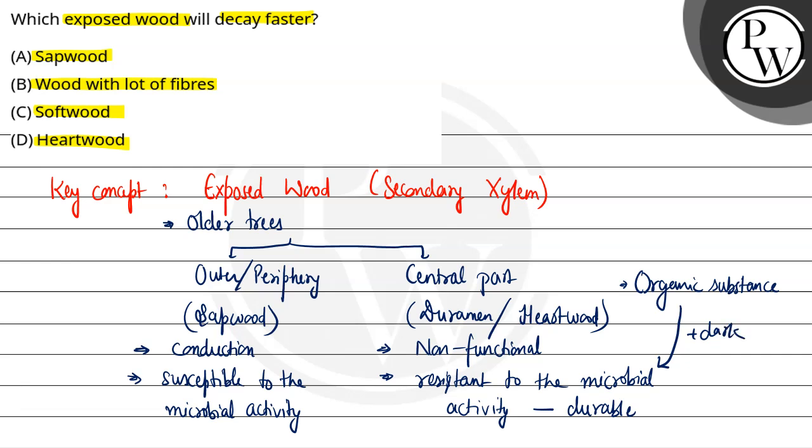So the question asks, which exposed wood will decay faster? First option is sapwood. Sapwood is very susceptible to microbial activity. So this option will be our correct one, because it is very susceptible, so ultimately it will decay faster very quickly.